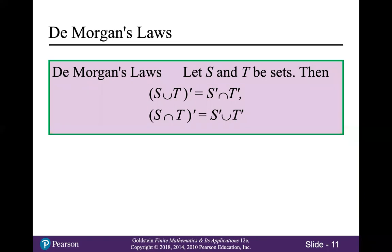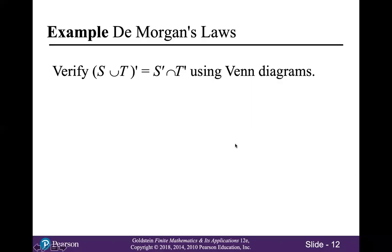And that brings us to DeMorgan's laws, which state that if S and T are sets, then the complement of S union T is equal to the intersection of S complement and T complement. And the complement of S intersect T is equal to the union of S complement and T complement. In this example, we will verify that the complement of S union T equals the intersection of S complement and T complement using Venn diagrams.